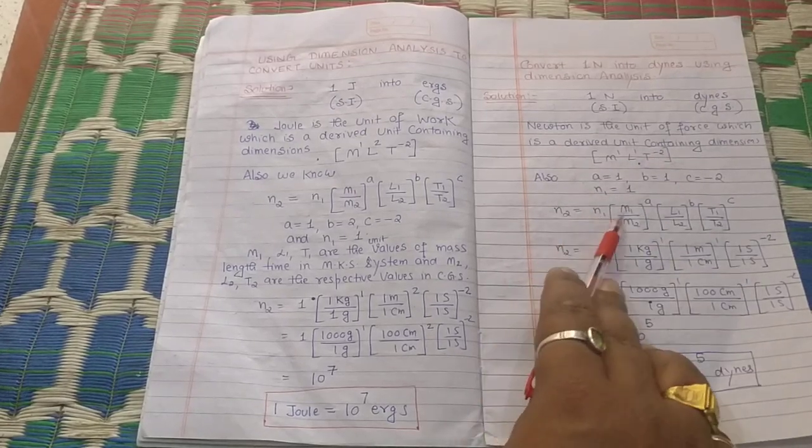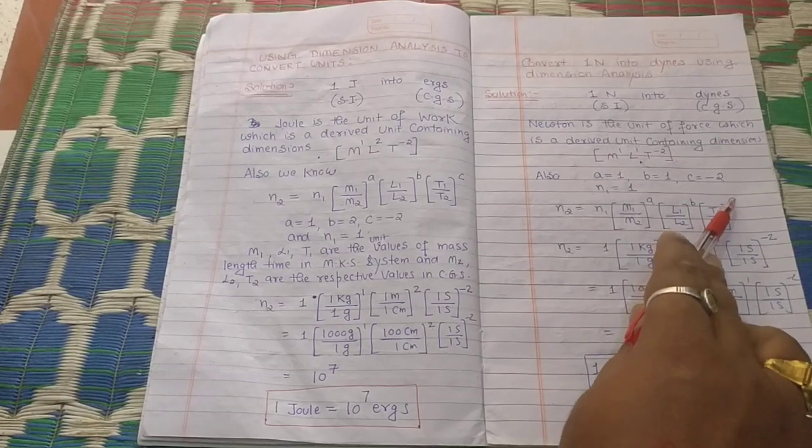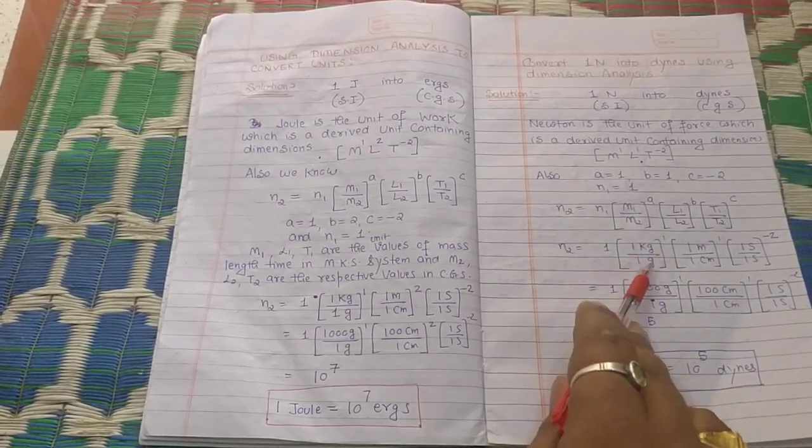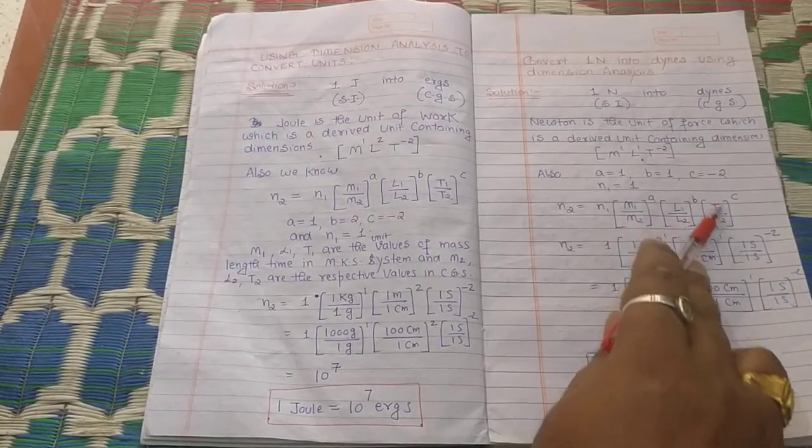Then N₂ = N₁ × (M₁/M₂)^A × (L₁/L₂)^B × (T₁/T₂)^C. So N₁ = 1, M₁ = 1 kg, M₂ = 1 gram, L₁ = 1 meter, L₂ = 1 centimeter, T₁ = 1 second, T₂ = 1 second.